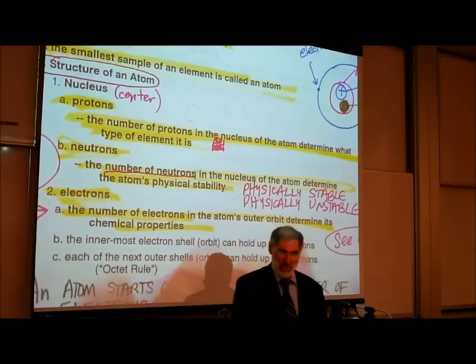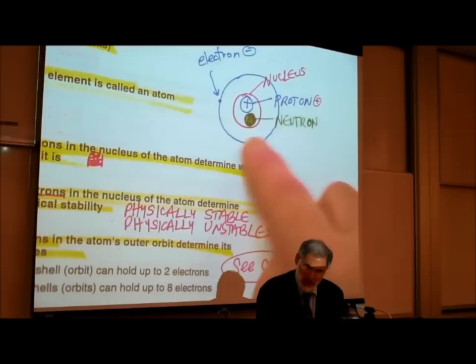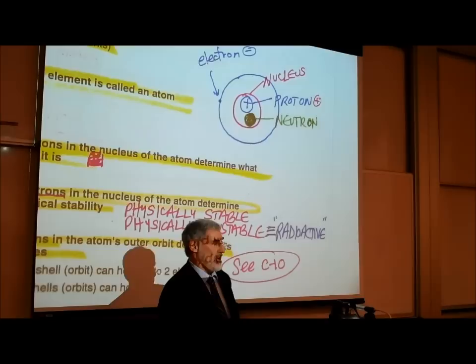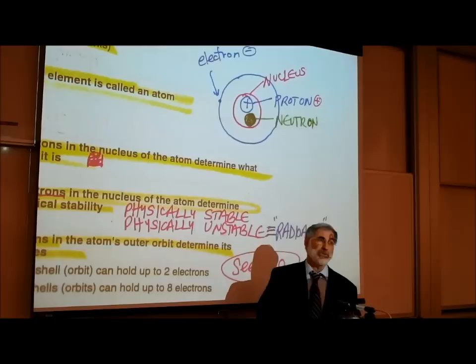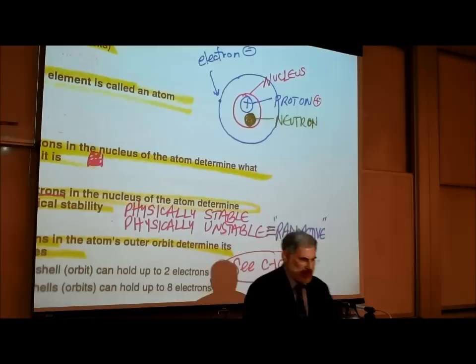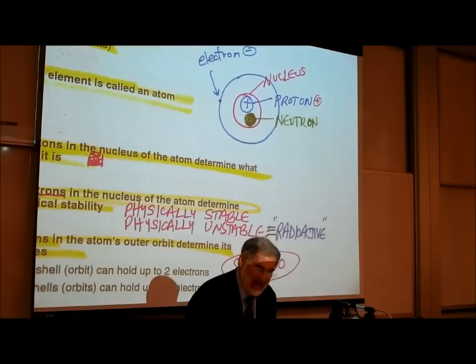Also in the nucleus there may be neutrons. Some atoms have no neutrons; there are other atoms that have one neutron, ten neutrons, or a hundred neutrons. They're called neutrons because they are electrically neutral — not positive and not negatively charged, they're electrically neutral.